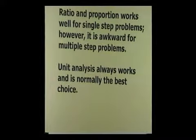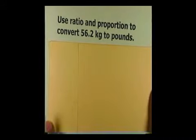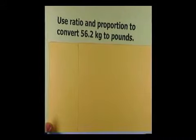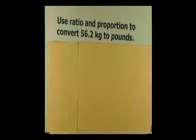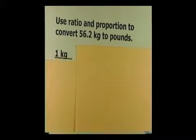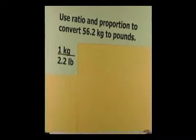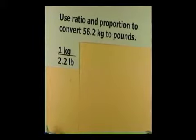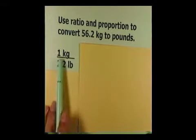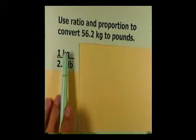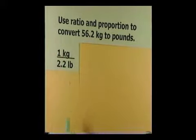Let's use ratio and proportion to convert 56.2 kilograms to pounds. To use ratio and proportion, you start by writing down your conversion fact — what's given. We're given that one kilogram is 2.2 pounds. That's the relationship between kilograms and pounds.